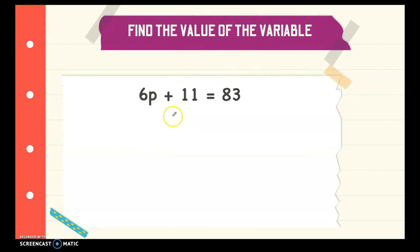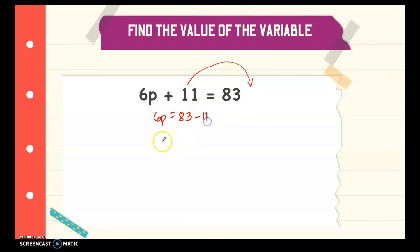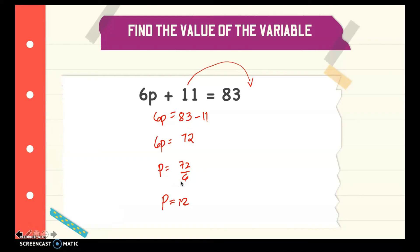Let's apply transposition to this example: 6p plus 11 is equal to 83. We transpose the numbers one by one to leave p on the left side. First, we transpose 11 — since it is positive, it becomes negative on the other side — giving 6p equals 83 minus 11, which is 72. Now we transpose the 6: since 6p is multiplication, the opposite is division, so p equals 72 divided by 6. Our answer is p equals 12.